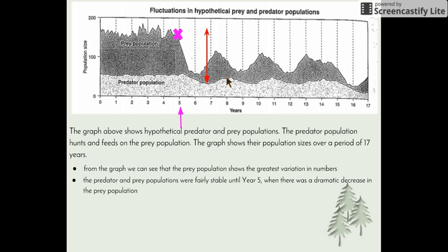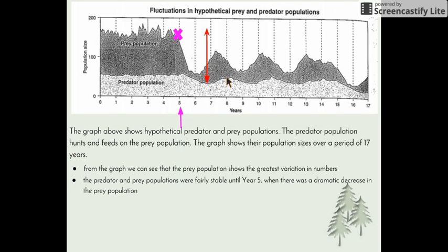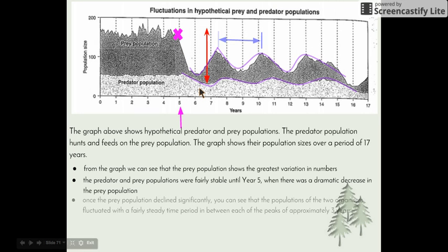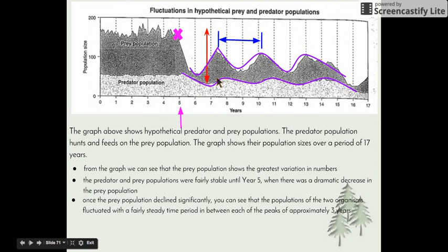The predator-prey populations were fairly stable until year five, where there was a dramatic decrease in the prey population. For our rabbits and foxes example, this could have been the result of the introduction of a virus into the rabbit population, causing a great number to die off. Once the prey population declined significantly, the populations of the two organisms began to fluctuate with a fairly steady time period between each of the peaks — approximately three years. We can see a prey peak just after year seven and again just after year ten, and predator peaks just before year eight and just before year eleven.